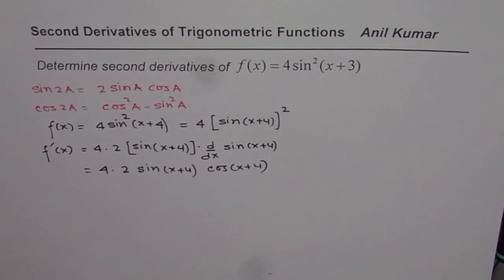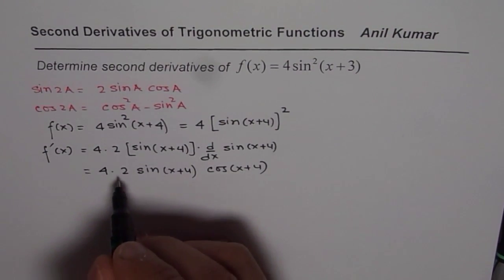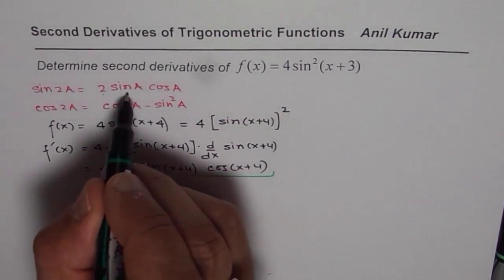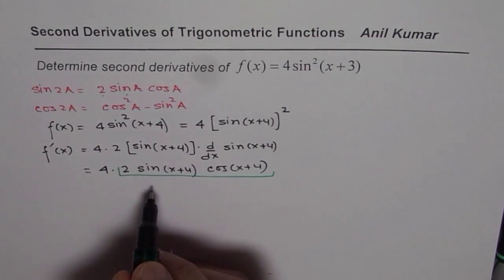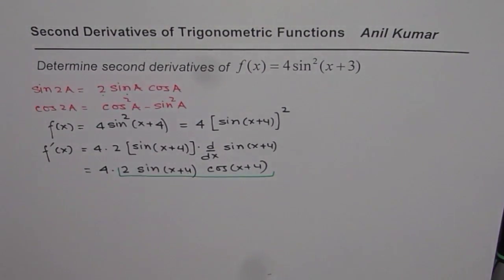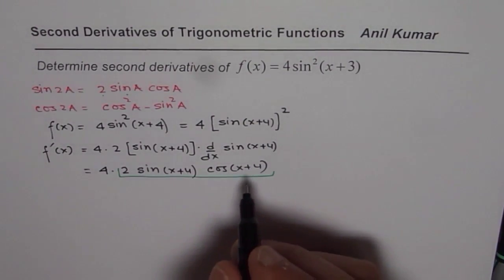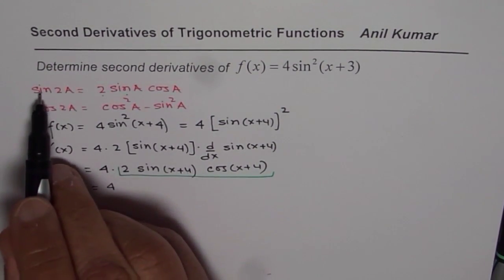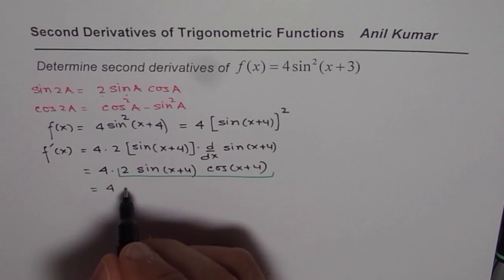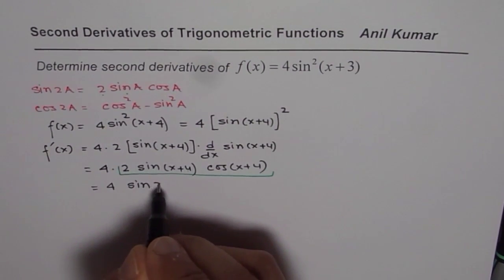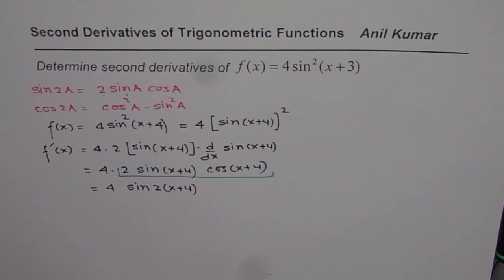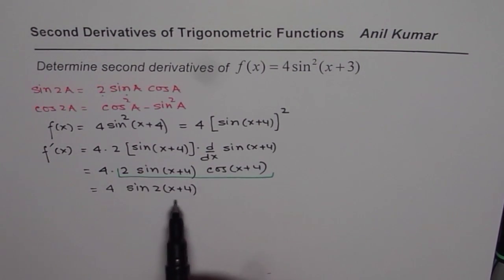The reason I did not simplify right away is because I wanted to show you that we could use the formula 2 sine a cos a, where a is x plus 4. Using this formula, I can simplify: 4 times 2 sine a cos a becomes sine 2a, so it should be written as 4 times sine of 2 times x plus 4. That is how we simplify the given expression, and that is very important to do.